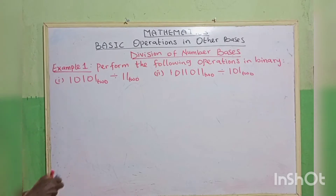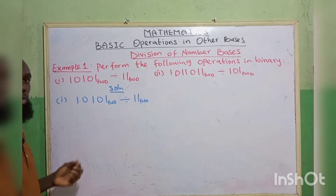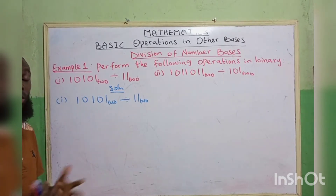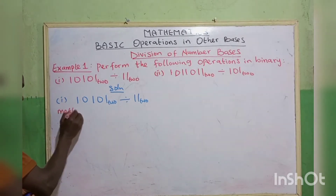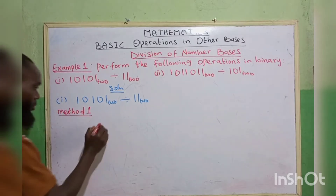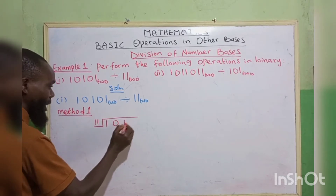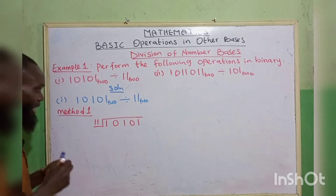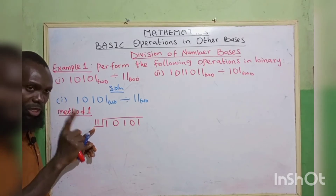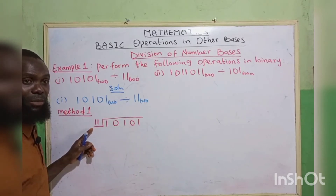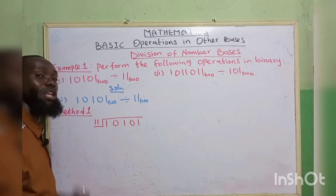Now, let's look at this. To get this division done, we can do it using two methods. Method 1. We have 11 here and 1, 0, 1, 0, 1. Whenever 11 can go into any of these numbers, it should only be 1. Even if it goes 2 or 3 times, we are not concerned because it's in base 2. We can only have two figures: 1 and 0. So if 11 cannot go there, it should be 0.